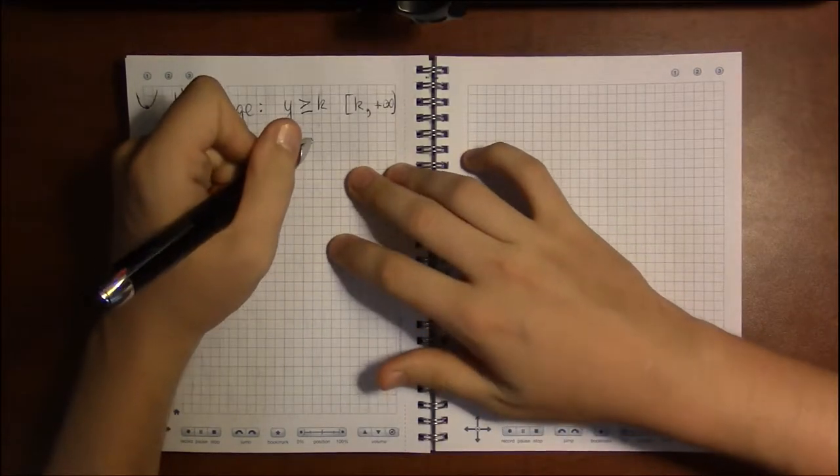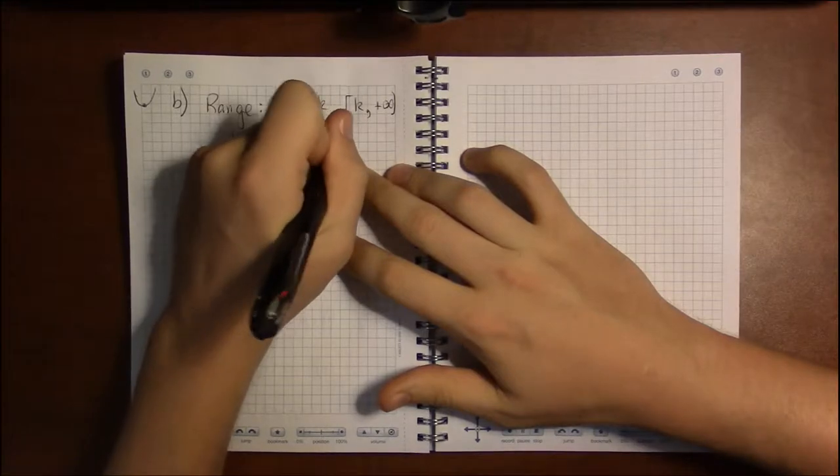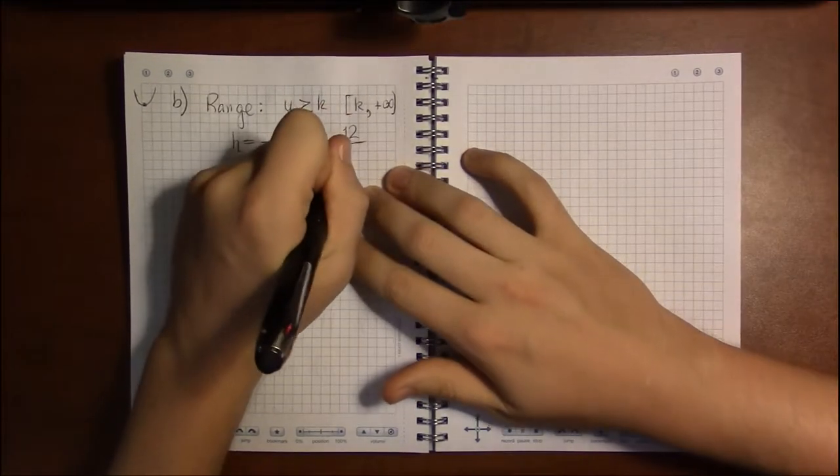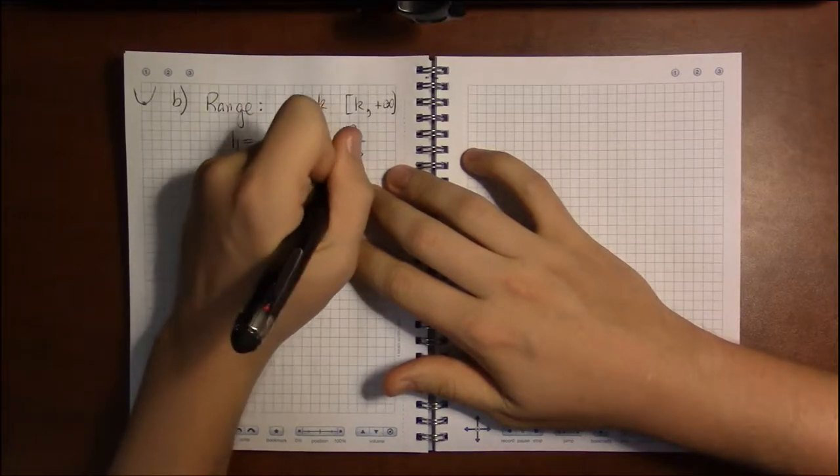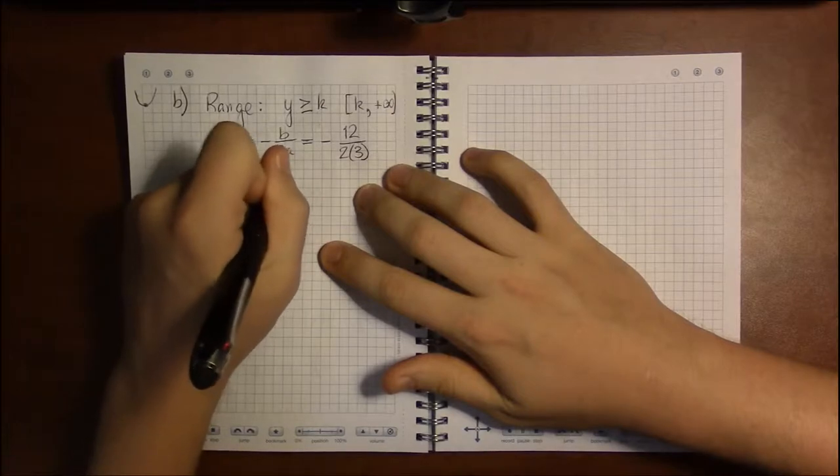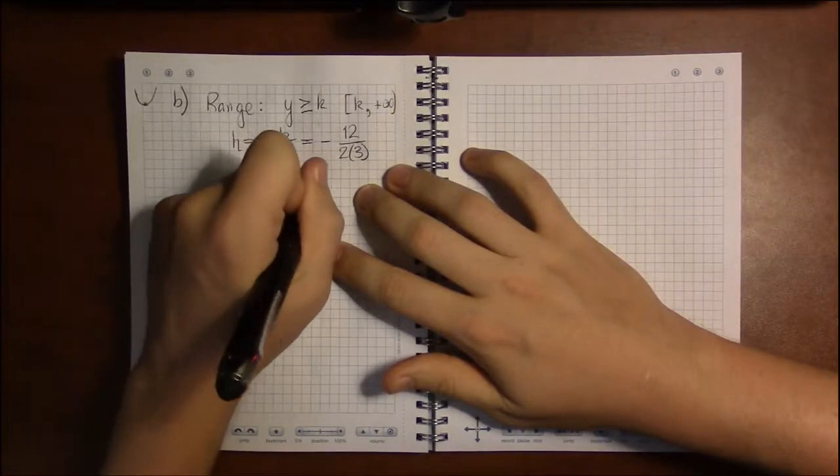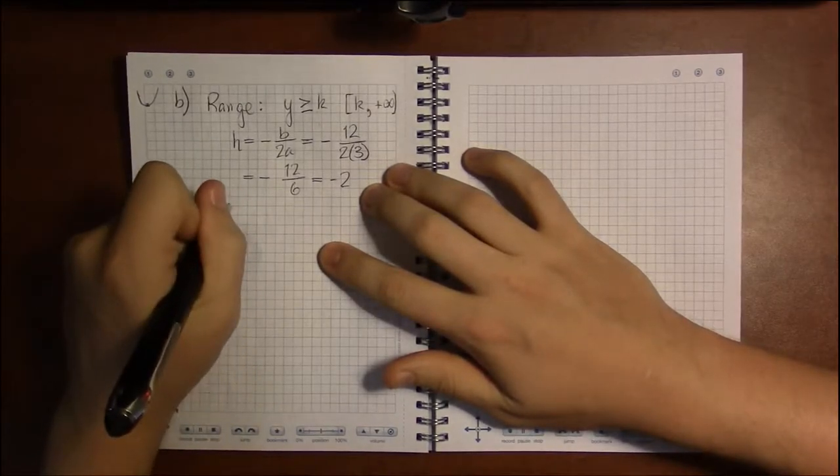So b, if I recall, is 12, and a in our case is 3, so h is minus 12 over 6, which is minus 2.